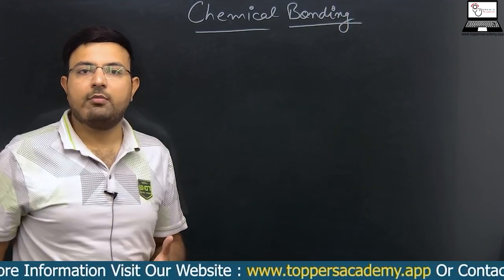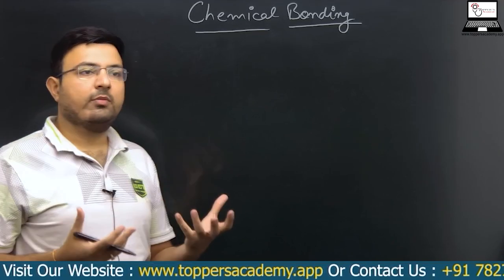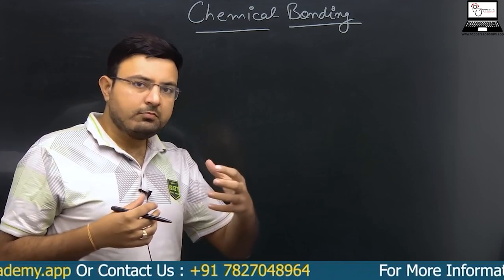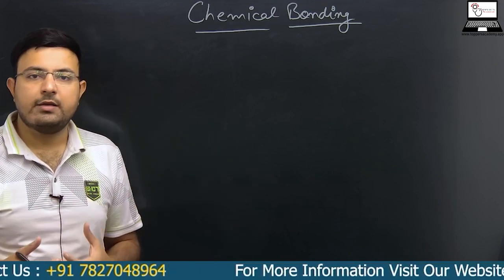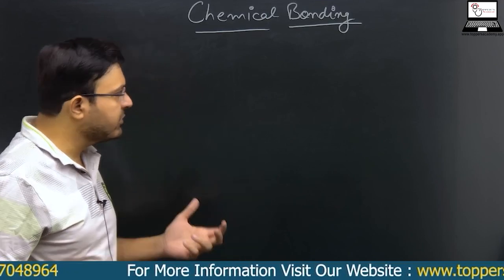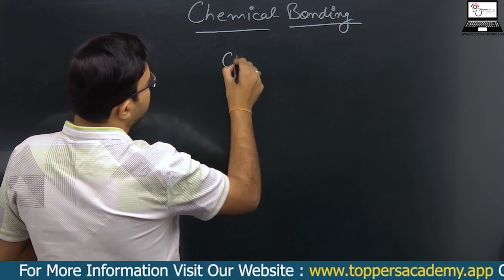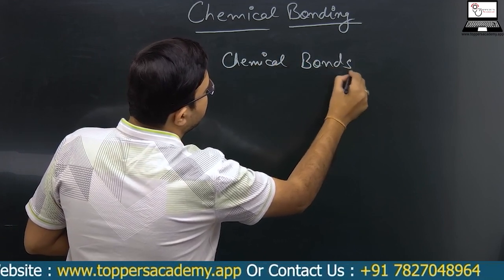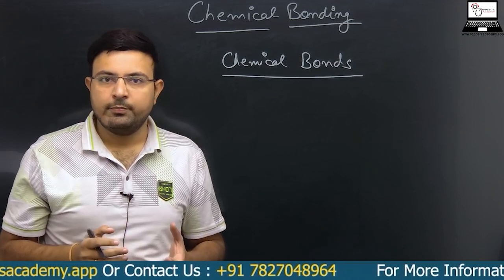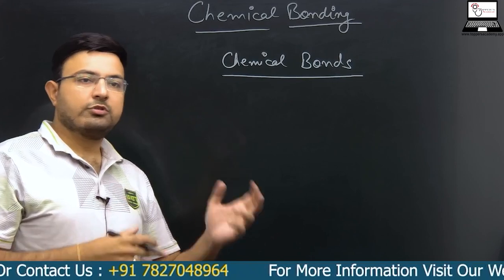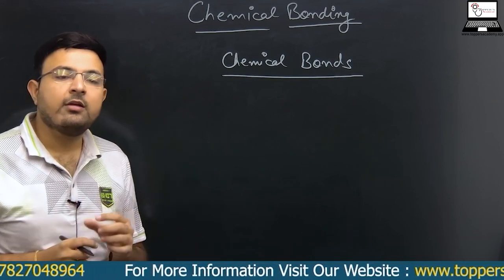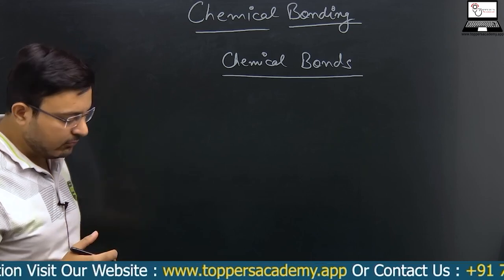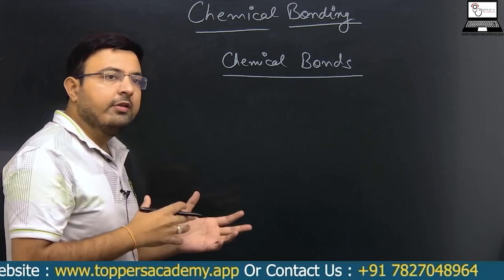So what are chemical bonds? We know there are atoms and molecules. In molecules or larger compounds, the atoms or the constituting ions are held by some chemical forces, and those chemical forces are known as chemical bonds. A chemical bond is an attractive force that holds the constituting atoms or ions together in a molecule or a larger compound.